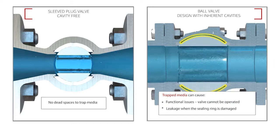Entrapped media can cause functional issues in which the valve cannot be operated or creates an increased risk of leakage, particularly when the sealing ring gets slightly damaged.